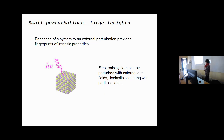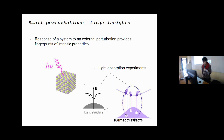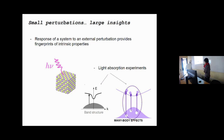Similarly with electronic systems: we can perturb the electronic system with an external electromagnetic field or through inelastic scattering with charged particles, and we gain information about the system. For instance, in a light absorption experiment we gain indirect information on the electronic structure, the band structure, and we can also understand whether many-body effects are strong or weak in the system.